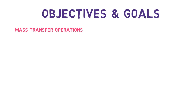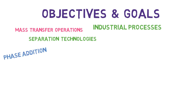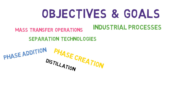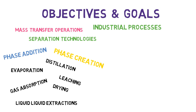The main goals of this course is to present all the mass transfer operations that are used in industrial processes. For instance, phase addition, phase creation processes, distillation, leaching, drying, evaporation, liquid extractions, gas absorption, and so on.